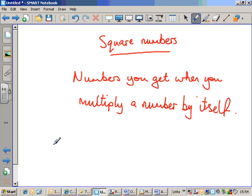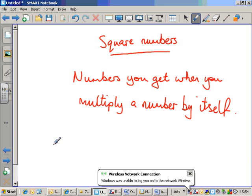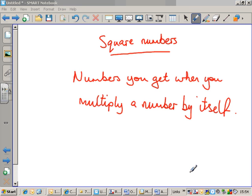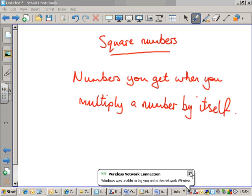Hi, a very short video about square numbers. Square numbers are the numbers you get when you multiply a number by itself. That's a fairly straightforward concept, let's do a couple of examples.